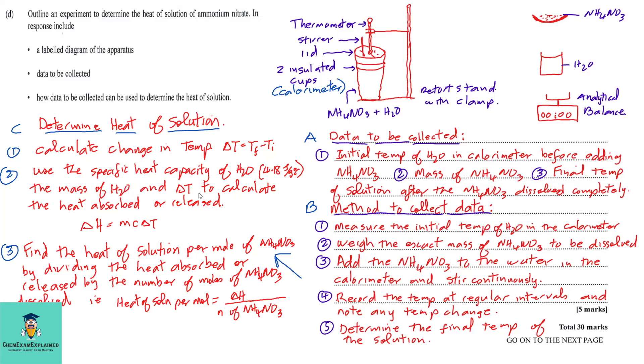So, after we find the temperature change, that will tell us if our reaction is endothermic or exothermic. We are going to use the equation ΔH = mcΔT, where m is the mass of water, c is the specific heat capacity of water, and ΔT is our temperature change.